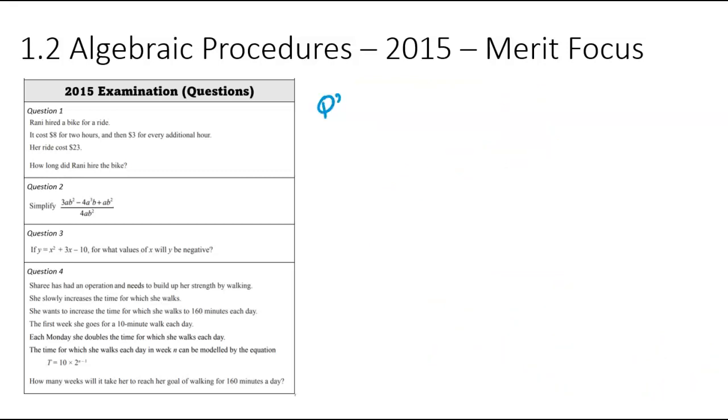Now on to question number three. And if Y is equal to X² plus 3X minus 10, for what values of X will Y be negative? So this one's a bit tricky. It looks like a quadratic inequation question. And the question's really asking us is when is Y going to be less than zero, or when is it going to be negative?